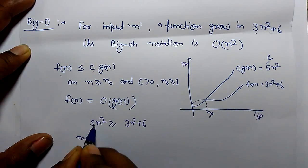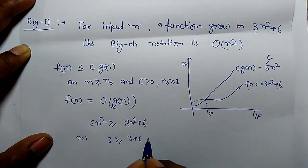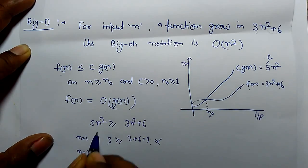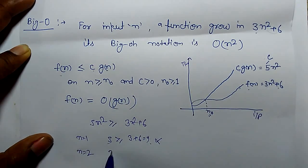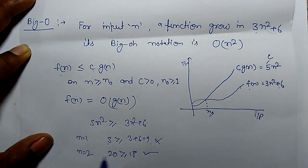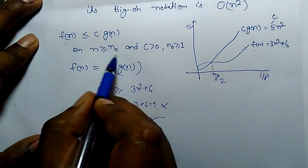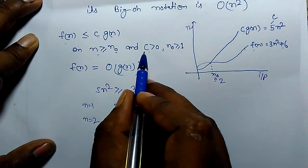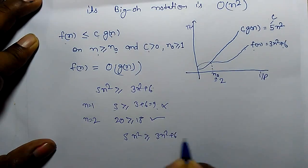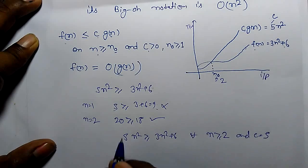If we put N = 1: 5(1) = 5, and 3(1) + 6 = 9. Since 5 is not greater than or equal to 9, N₀ cannot be 1. If N = 2: 5(4) = 20, and 3(4) + 6 = 18. Now 20 is greater than or equal to 18, so N₀ can be 2. For all N ≥ 2 and C = 5, we can see that 5N² ≥ 3N² + 6.